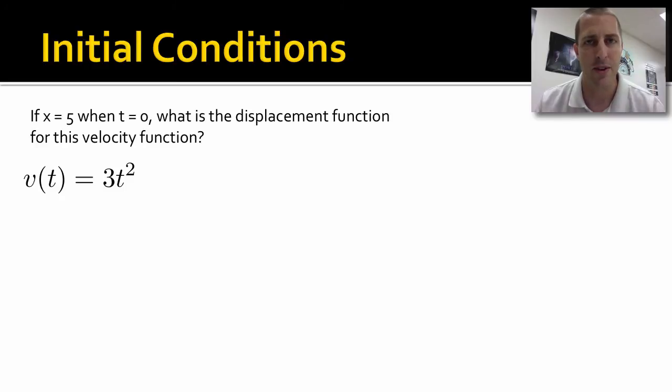The reason we have those constants is because of initial conditions. If we have initial conditions that are not zero, we have to take that into account. Here, at time equals zero, our position is already 5. Let's see what we do with that.